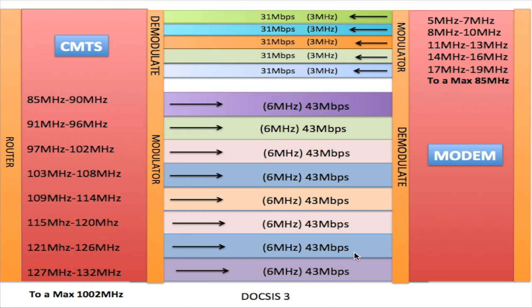During peak hours is when you have problems with cable — when everybody is on the internet, more customers are using these channels simultaneously. You may not be able to get your full bandwidth during peak hours as you would during off-peak hours, and that is the downfall of cable.